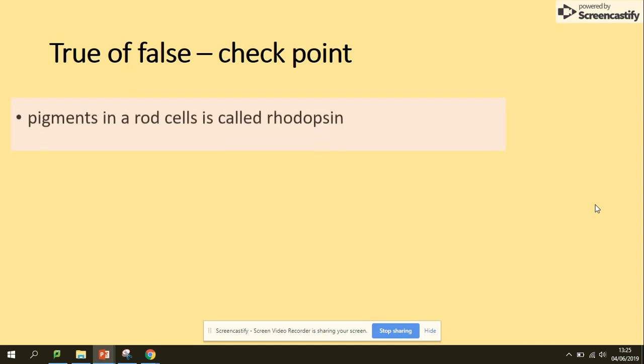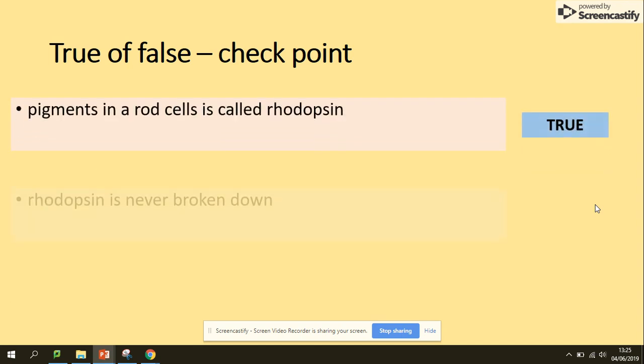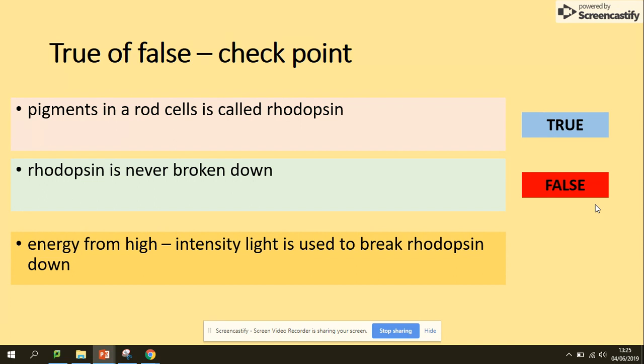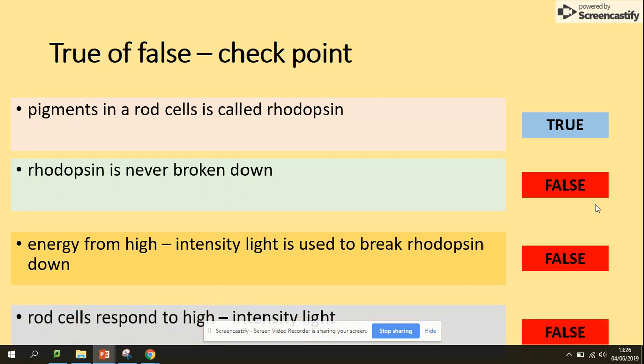Let's have a quick checkpoint here. Pigments in rod cells: it's called rhodopsin. Correct. Rhodopsin is never broken down. False. Energy from high intensity light is used to break down rhodopsin. False. We need low light intensity. And rod cells respond to high light intensity. That's false. They respond to low light intensity.